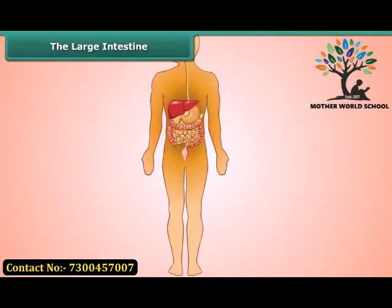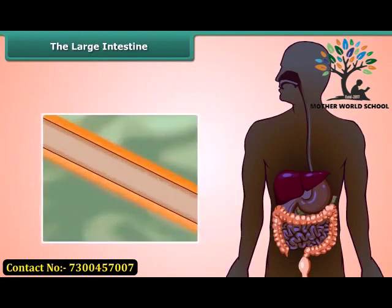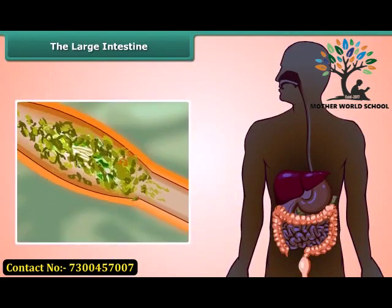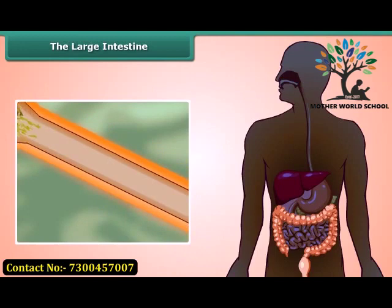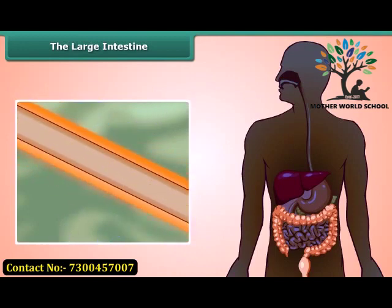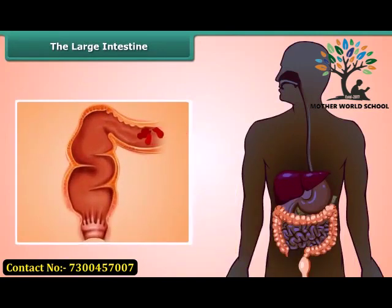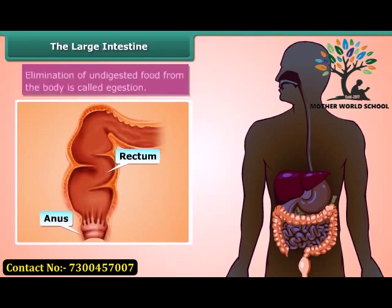When chyme gets into the large intestine, it absorbs most of the water and some salts from the undigested food. This step is important because recovering water keeps us safe from getting dehydrated. Once most of the water is gone, solid waste moves to the last part of the large intestine called the rectum, and the fecal matter is removed through the anus. This is called egestion. This is how human digestion completes.